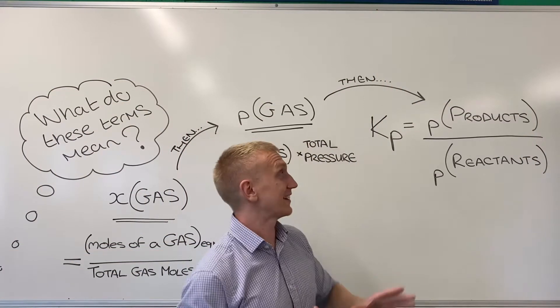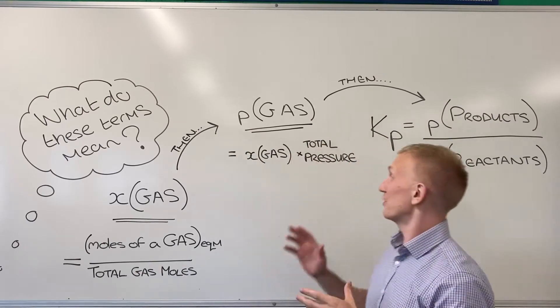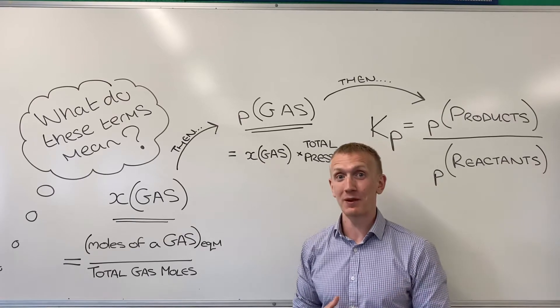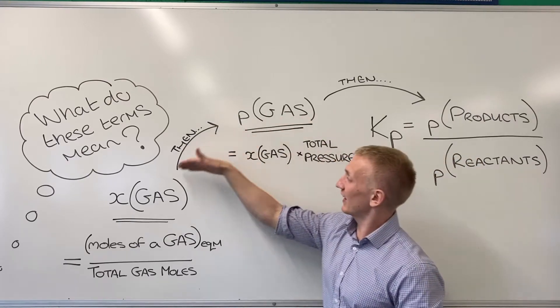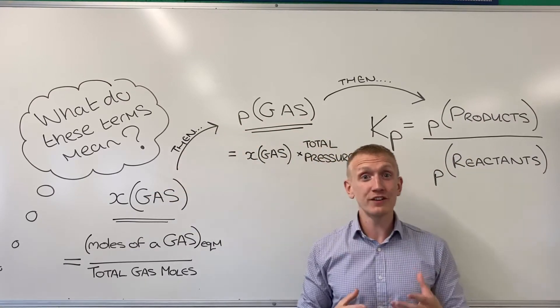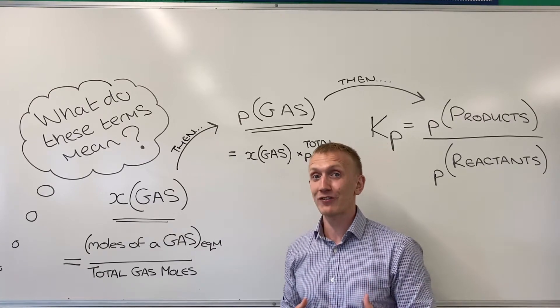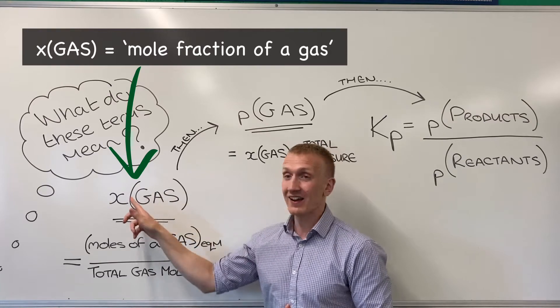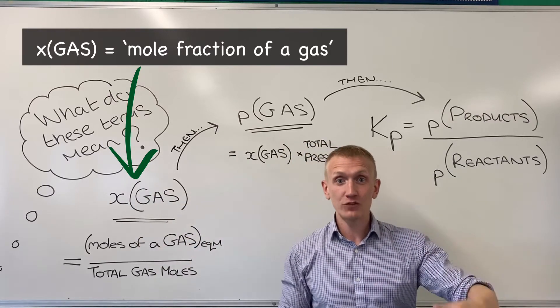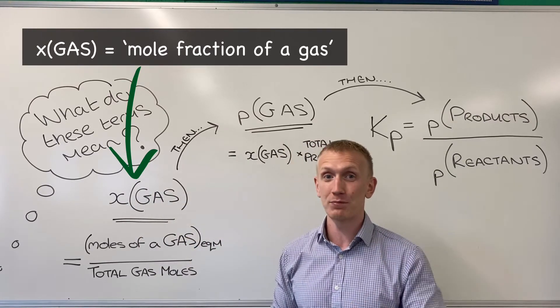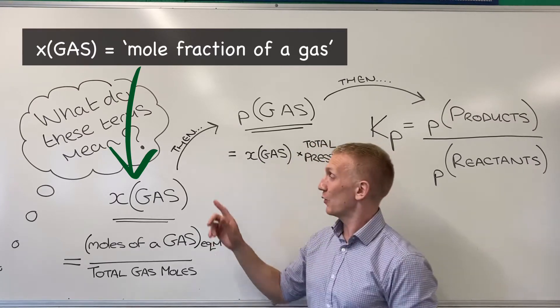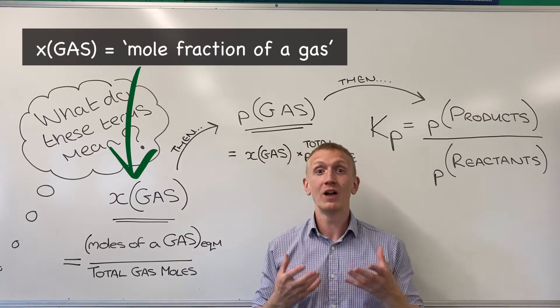Like I said, in order to calculate Kp we need to know the partial pressures of our individual gases from the equilibrium mixture. And in order to calculate the partial pressures of our individual gases from that equilibrium mixture, we need to know our mole fractions of all of our individual components of that equilibrium mixture. All of the gases that are going to be involved we need to know something called their mole fraction.